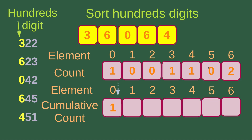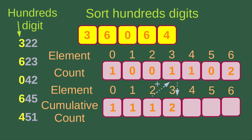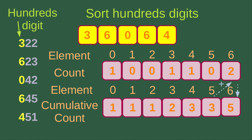Then I try to find out the cumulative count. Initially, 0 has a count value of 1, so I put 1 as the beginning of the cumulative count. For element number 1, the cumulative count is 1 (adding previous cumulative count to current count). For element number 2, the cumulative count goes to 1. For number 3, the cumulative count is 1 plus 1, which is 2. For element number 4, it goes to 3. For element number 5, it stays at 3. And for element number 6, the cumulative count goes to 5.